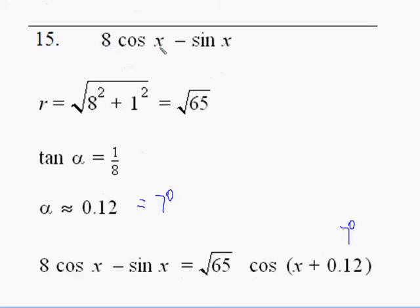Eight cos x minus sin x, well, eight squared plus one squared gives us 65. And one eighth inverse tan gives us approximately 0.12 radians, or seven degrees.